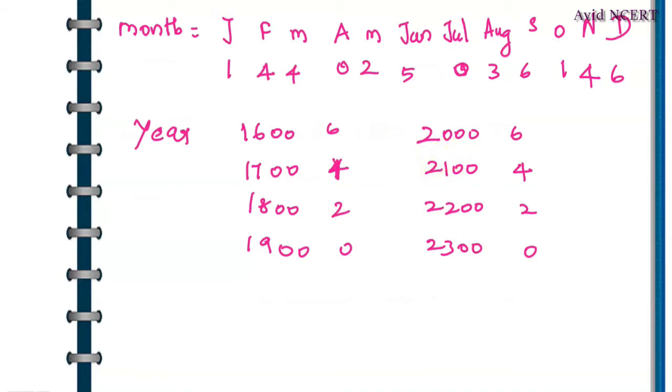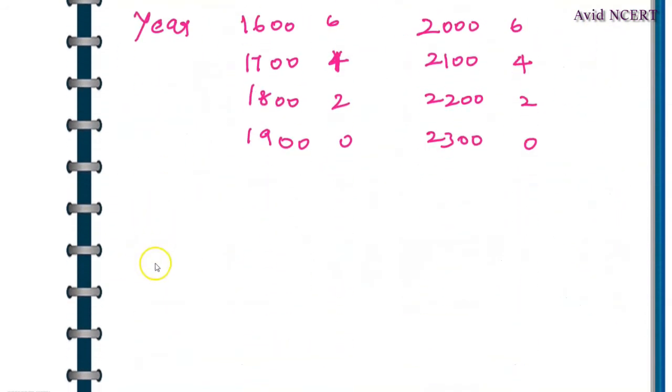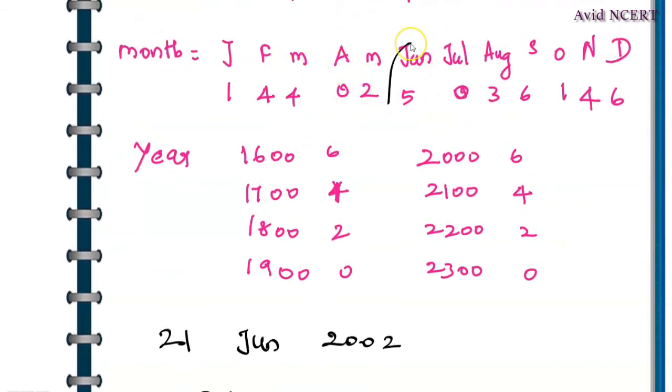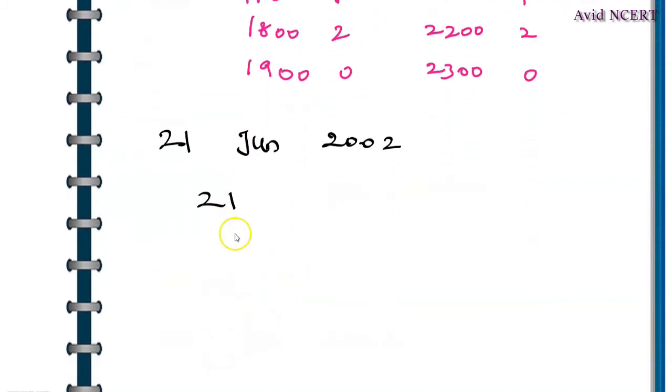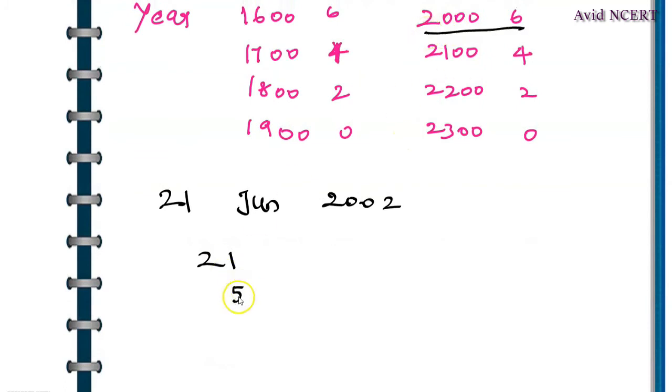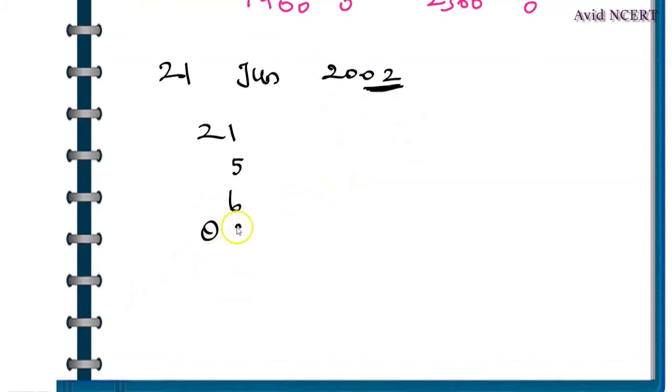Now the question is 21st June 2002. Substitute all the codes: for date it is added as is, so 21. For June, the code is 5. For 2002, the code is 6. Then write the last two digits: 0 and 2. Divide 02 by 4 and check for the quotient.